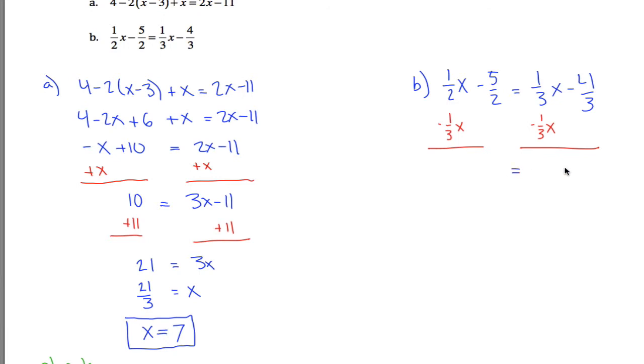What that leaves me on the right-hand side is just the negative 4 thirds because these x terms cancel out. But on the left side, I have to figure out what's 1 half minus 1 third. And that'll be the coefficient on the x term. Well, 1 half is 3 sixths. 1 third is 2 sixths. So 3 sixths minus 2 sixths, I'm left with just 1 sixth.